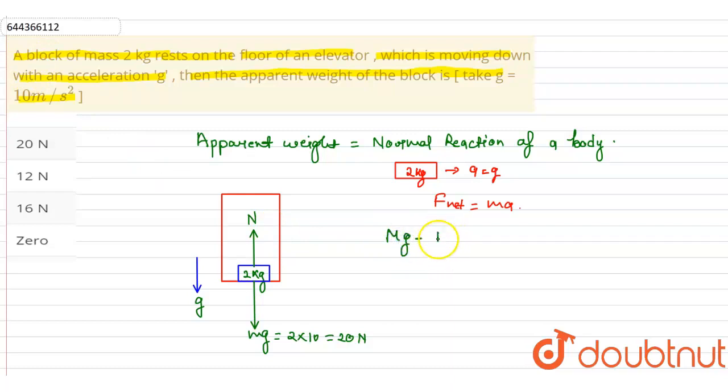mg minus N equals ma. Putting the values: 20 newtons minus N equals 20 newtons. You can see that these cancel out, giving N equals zero. So the apparent weight of this block is zero, and option D is correct. Thank you.